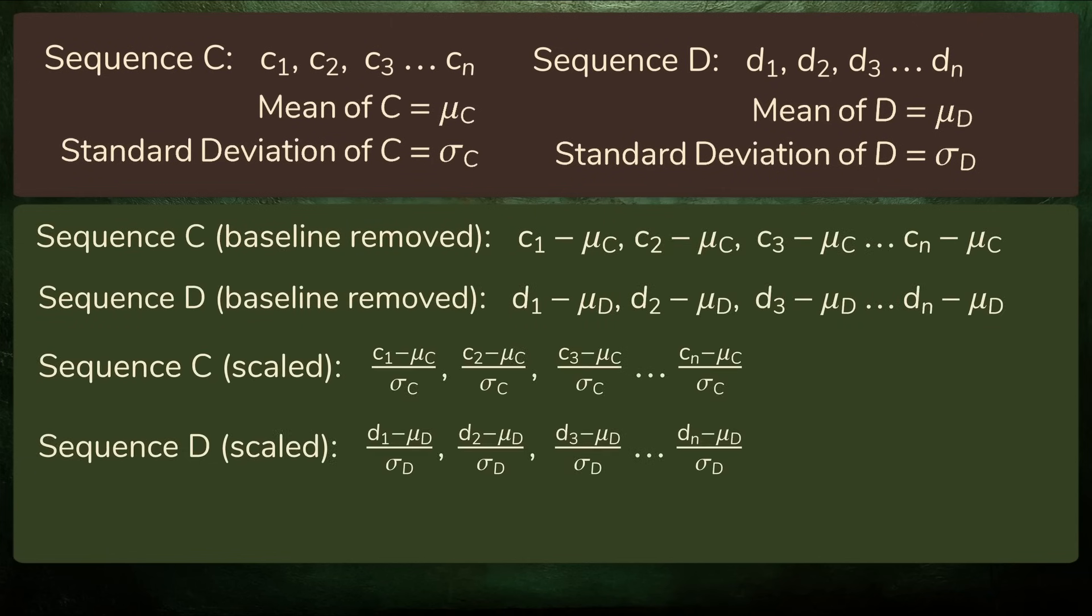Next, divide these values by their respective standard deviations to put them on the same scale. These resulting numbers are all z-scores. They're positive for data that's above average and negative for data that's below average.